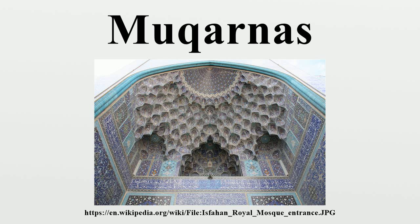They are used for domes, and especially half domes in entrances and apses, mostly in traditional Islamic and Persian architecture. When some elements project downwards, the style may be called makaraba; these are reminiscent of stalactites, and may be called stalactite vaults.